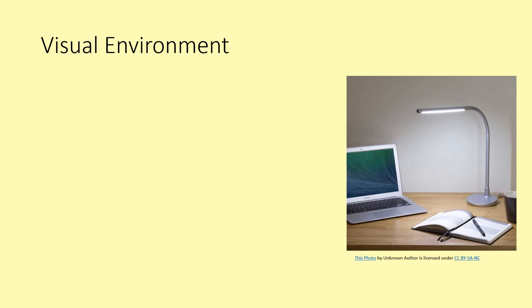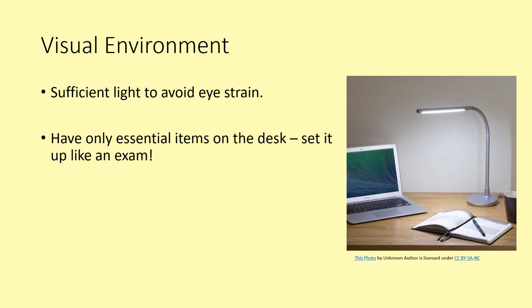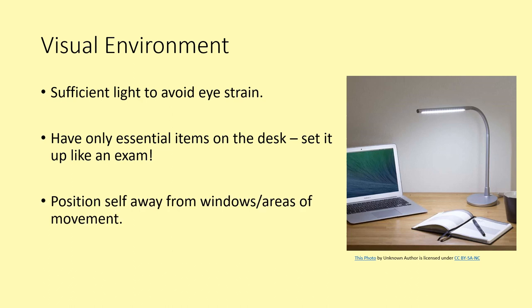One element we must consider is the visual environment. Some tips include ensuring our study environment has sufficient light to reduce eye strain, clearing your desk to only essential items such as paper, pens, water and a calculator as if you were sitting an exam. If you find visual distractions difficult to manage, try to position yourself away from a window or areas in the house where people are moving around, for example the kitchen, or try to face your desk to a blank wall.